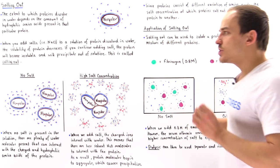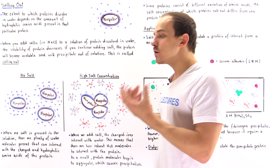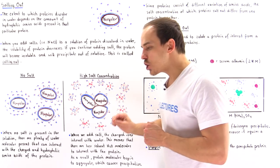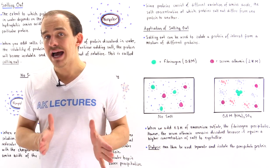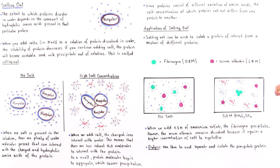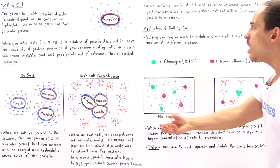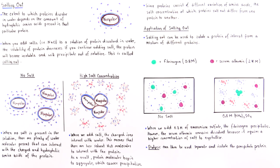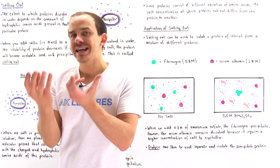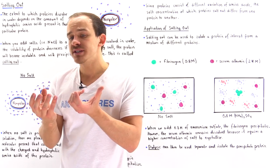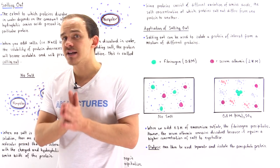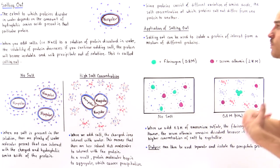An application of salting out is protein purification. This can be done because different proteins are composed of different amino acids, and different amino acids have different hydrophilic and hydrophobic natures. Because proteins consist of different variations of amino acids, they have different solubilities in water. That means the salt concentration at which proteins salt out will differ from one protein to another. So if we have two different proteins in an aqueous solution with a large difference in their salt-out concentrations, we can separate and purify them using the salting out method.